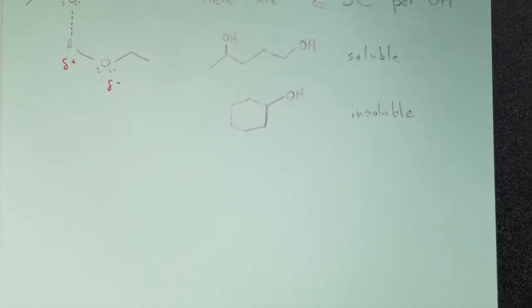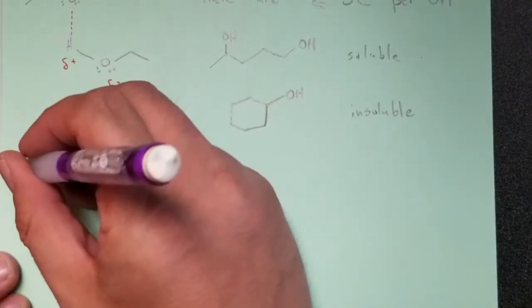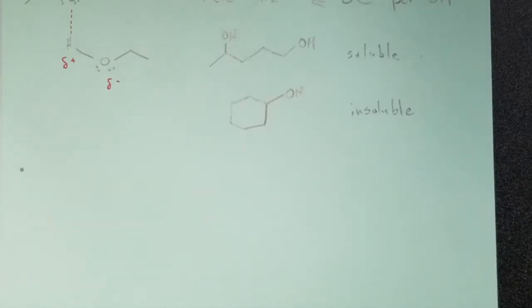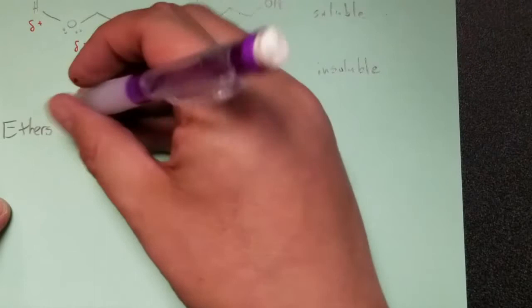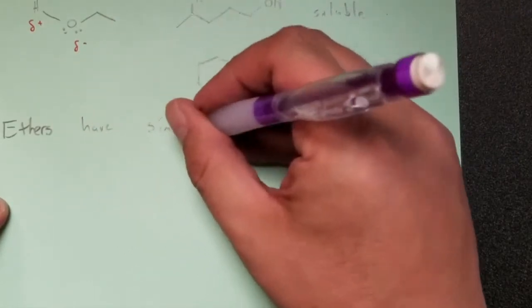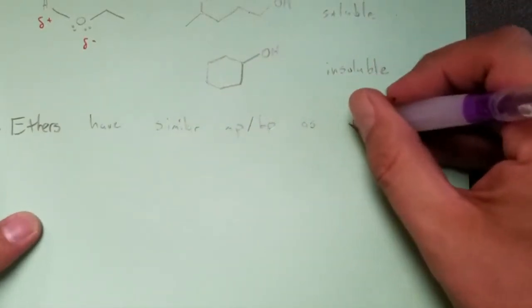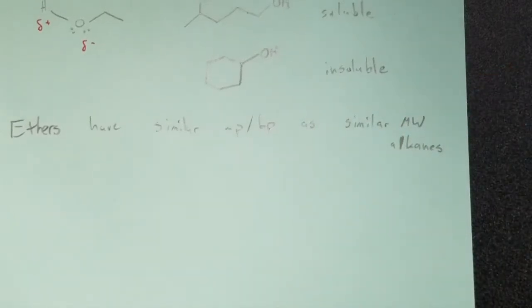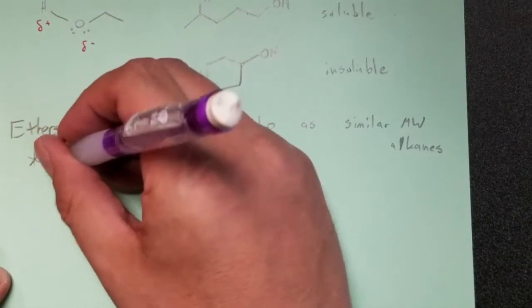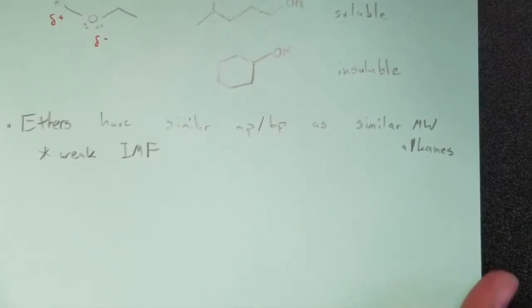For ether physical properties: ethers have similar melting points and boiling points as alkanes with similar molecular weight. This is because ethers do have a dipole moment but have pretty weak intermolecular forces. In general, ethers tend to be very volatile — low boiling point, high vapor pressure — so you should work in a fume hood when handling them. Diethyl ether in particular can knock you out literally.